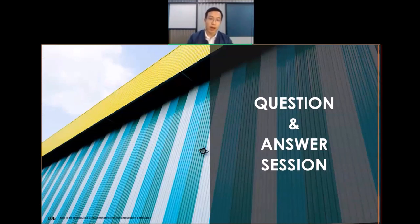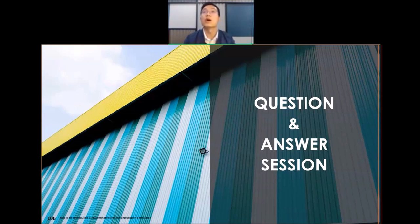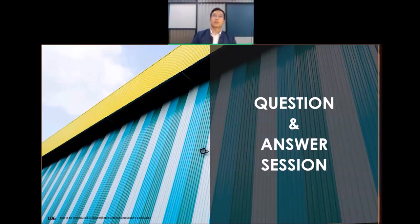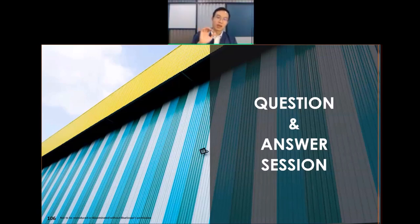With that, I'd like to conclude my session for today. Before we end, let's go to Q&A. The first question is: are there any differences between metallic and textured finishes aside from appearance? Yes - for metallic finishes, viewing from different angles gives different color tones because of the metallic pigment included, giving different color intensity and shades depending on angle.